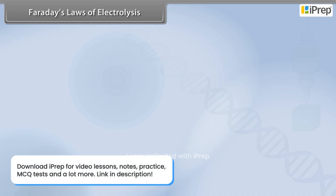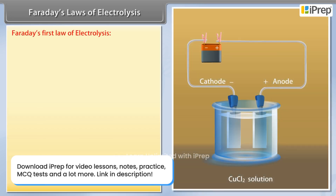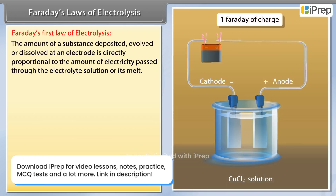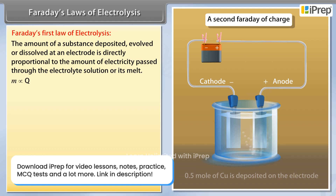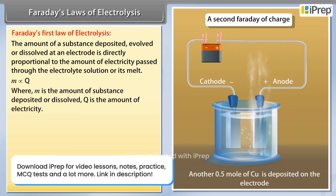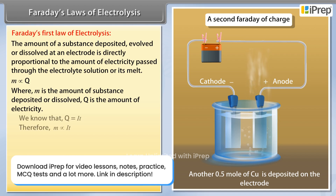Faraday's First Law of Electrolysis: the amount of a substance deposited, evolved, or dissolved at an electrode is directly proportional to the amount of electricity passed through the electrolyte solution or its melt. That is, m is directly proportional to q, where m is the amount of substance deposited or dissolved, and q is the amount of electricity.